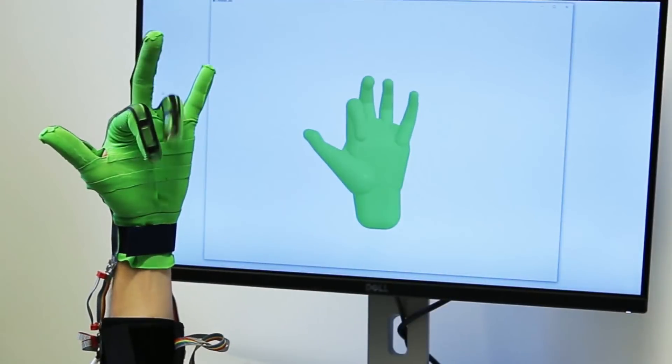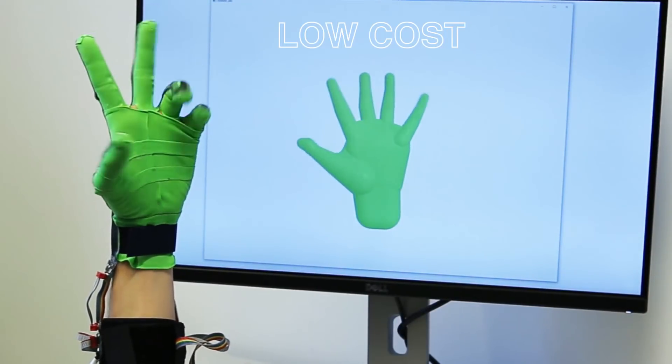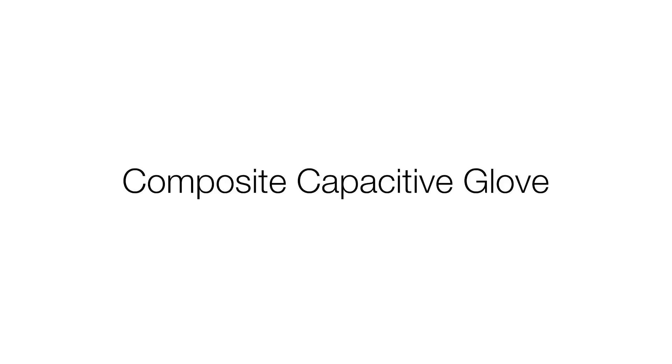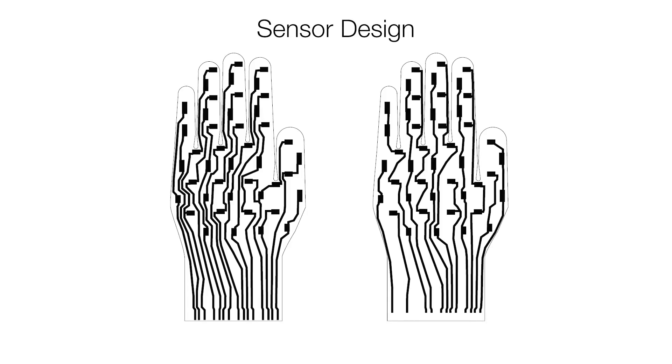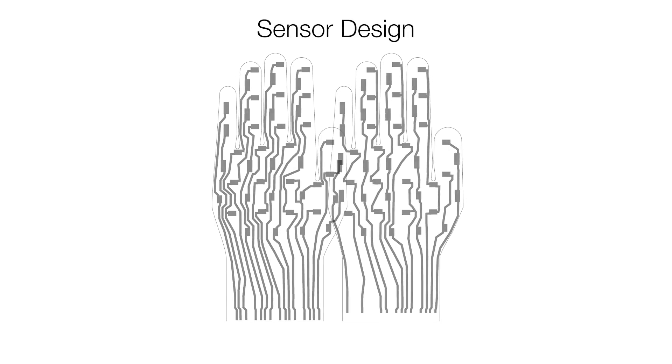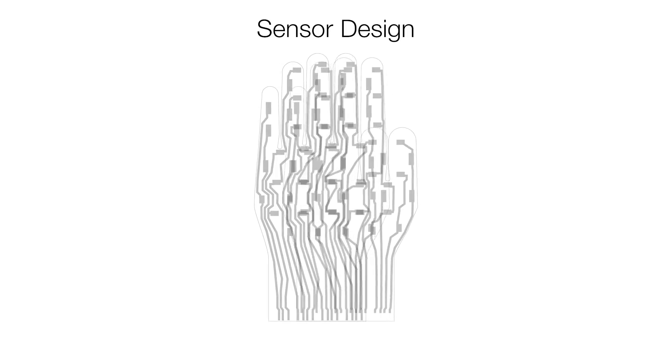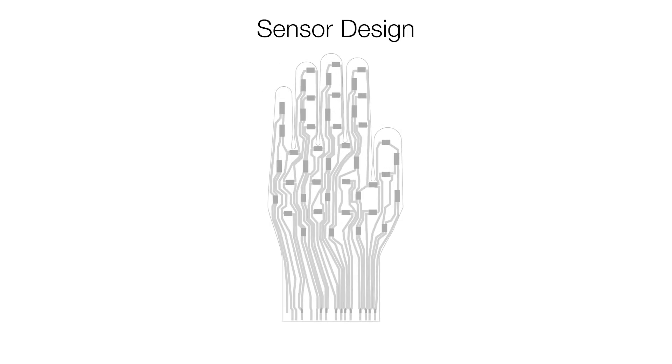We demonstrate how our glove can be fabricated at low cost using common tools available in modern fabrication labs. The sensor consists of two conductive silicon patterns embedded into one single flat silicon sheet with a thickness of 1.25 mm in the shape of a hand.